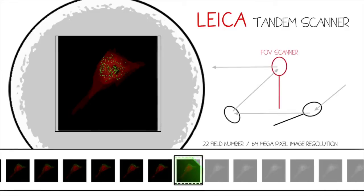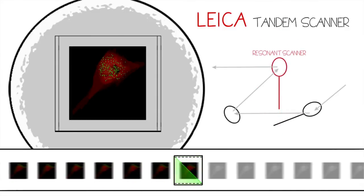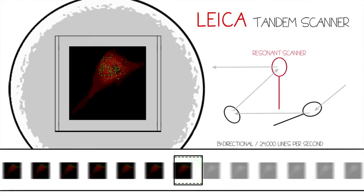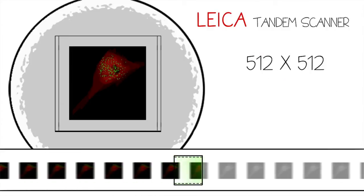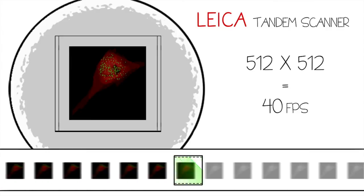Leica's fastest resonance scanner oscillates at 12,000 Hz in the x-direction and can run at a bidirectional rate of 24,000 lines per second. For a standard 512 x 512 live cell imaging resolution, this translates into 40 full frames per second.